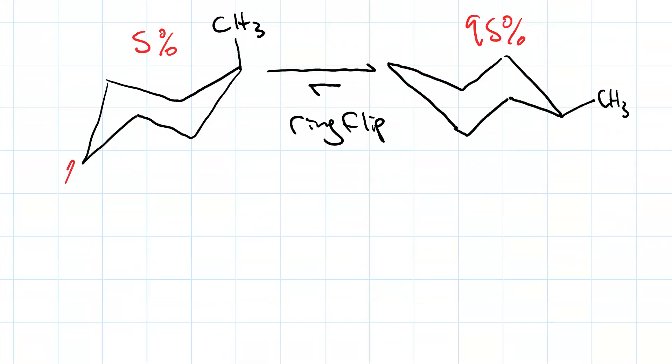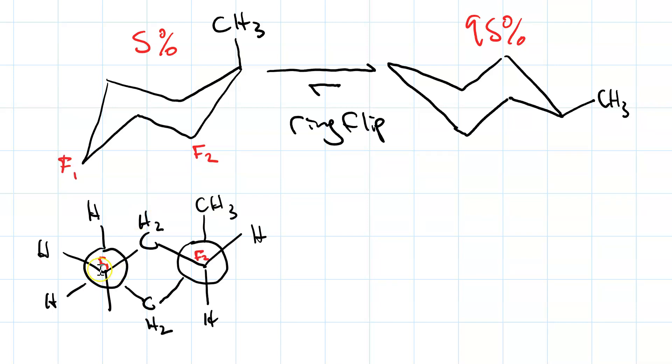We'll draw a Newman projection, looking down these two bonds, to see why one chair is less stable than the other. So here's our Newman projection. This triangle here represents this front carbon. This is the back carbon representing this circle. This triangle here represents this front carbon. And the back carbon, where our axial bulky group is, is this circle.